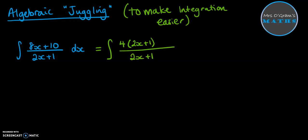Now if we look at that top term there, if we did 4 times 2x plus 1, that would give us 8x plus 4. Now that's almost the same as what we wanted over here, but it's not quite.